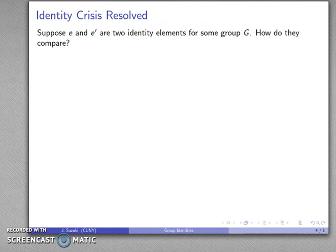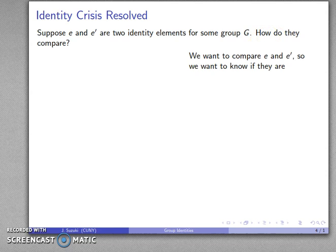So let's take a look at our identity crisis. Suppose I have E and E prime, and suppose there are two identity elements for some group G. So here's the bus that I'm going to get on. E and E prime are two identity elements for some group G, and we want to know how they compare. A useful idea here is when you're comparing two things, the first key question you want to answer is: Are they equal, or are they different?